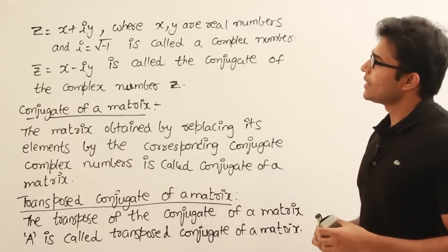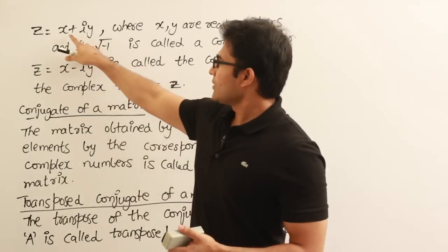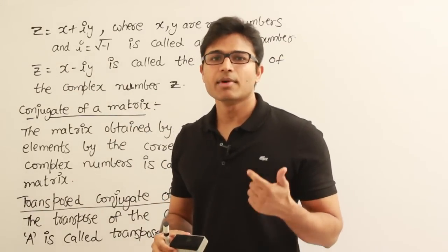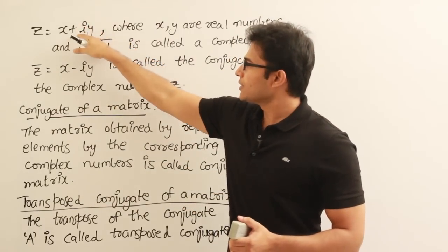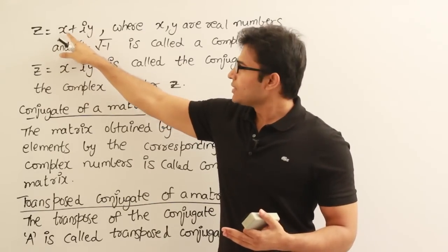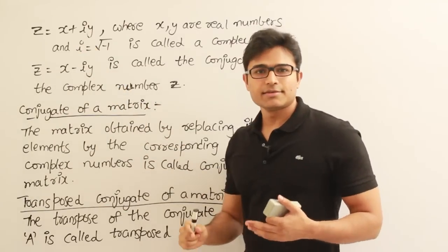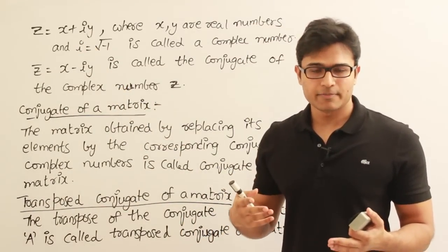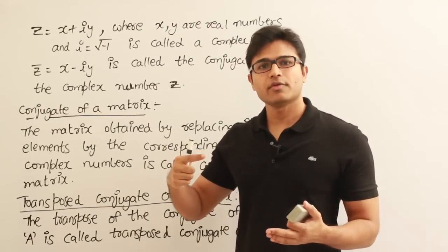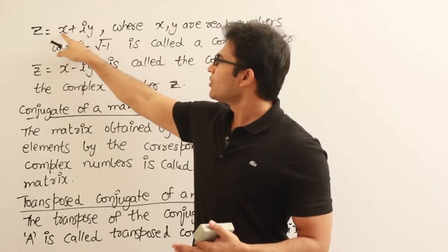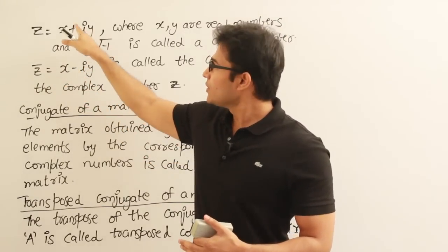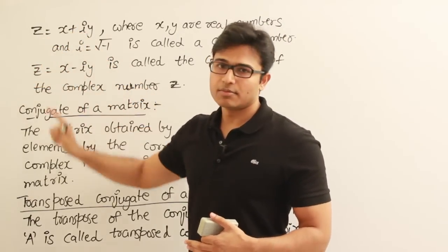If z can be written as x plus iy, where x and y are real numbers and i is an imaginary number, then the number z is called a complex number. Now, if I have z equal to x plus iy, then the conjugate of this complex number can be obtained by negating the imaginary part — changing its sign. So if z equals x plus iy, then z-bar equals x minus iy is the conjugate of z.